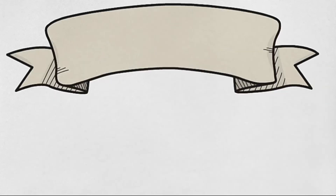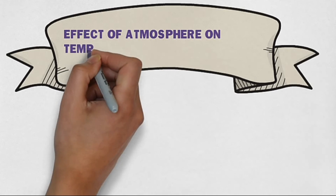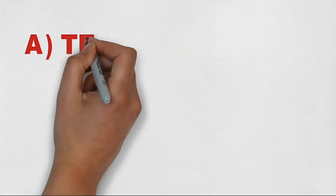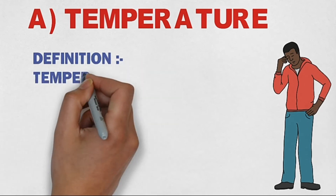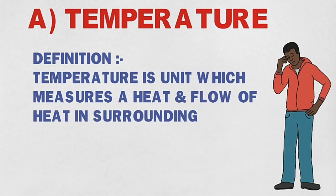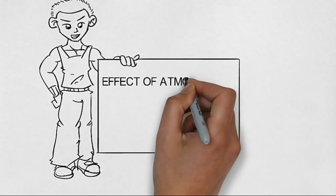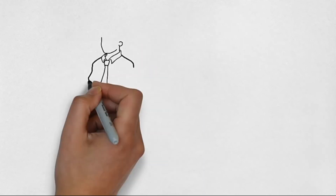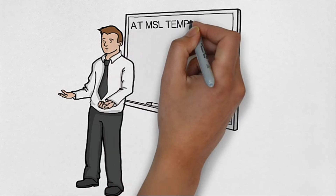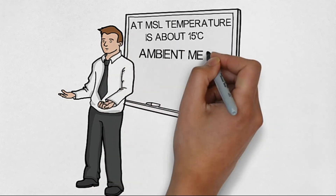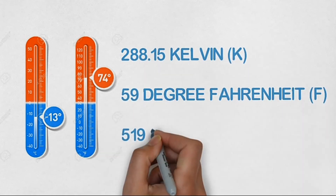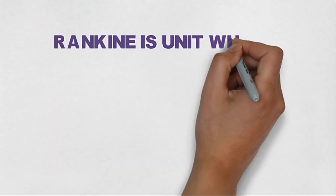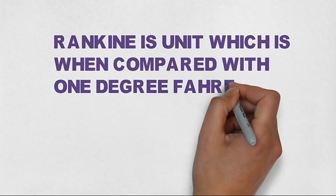Now we will learn the effect of the atmosphere on temperature, pressure, and density as we go from mean sea level to higher altitude. Temperature is defined as a measure of heat and the flow of heat in a surrounding. At mean sea level, the ambient (surrounding) temperature is 15°C according to ISA. In other units, this is 288.15 Kelvin, 59°F, and 519 Rankine.